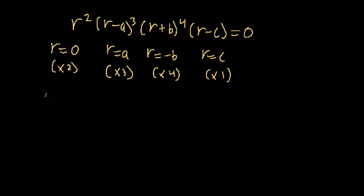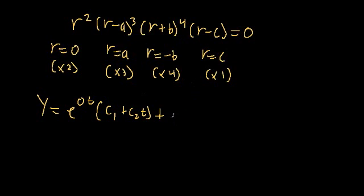We can write the general solution of the form y is equal to, let's start off with this root, e to the zero t, which is technically just one. This has to be repeated twice, so we'll say times c1 plus c2 t. So we've repeated this root twice, now let's move on to this root, plus e to the a t, and this is repeated three times, so it's going to be c3 plus c4 t plus c5 t squared. Three linearly independent roots for the root r is equal to a.